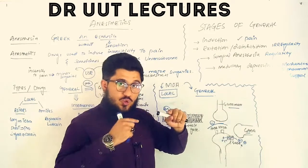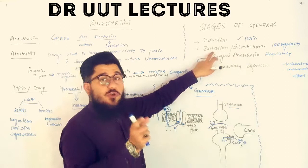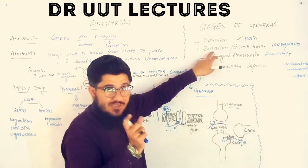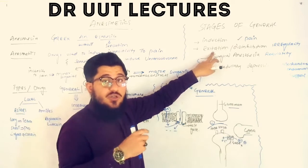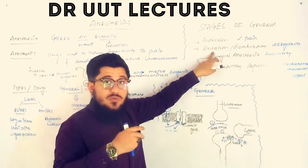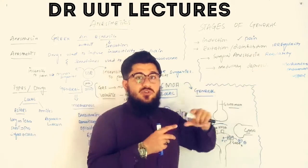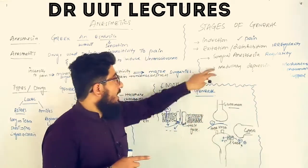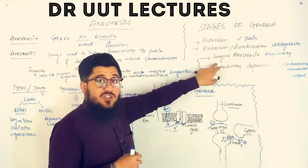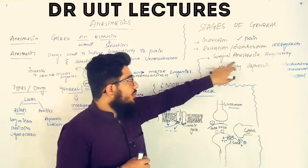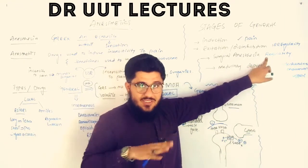Stage two is excitation or disinhibition. We intend inhibition, but for a short period the body undergoes disinhibition or excitation. Heart rate, blood pressure, and breathing rate become irregular. Amnesia is also observed in this stage.